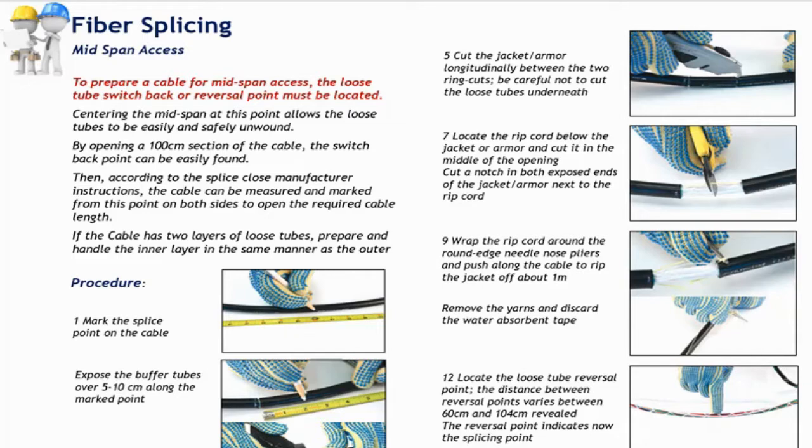The most important thing and the most relevant difference between the end access and the mid-span access is that in mid-span, you are not accessing the cable end. Therefore, you need to find out the exact place where the loose tubes switch back in the cable structure. The loose tube fiber cables are made in a way that the loose tubes are rotating inside the cable and they change the rotation direction, depending on the cable manufacturer, between 60 centimeters and maybe 110 centimeters or so. So, you need to discover and expose that exact point where the fiber tubes switch the rotation direction. At that point, you have the ability to unwind the interlinked fiber tubes. With one meter opening, you are most likely able to find that switchback point.